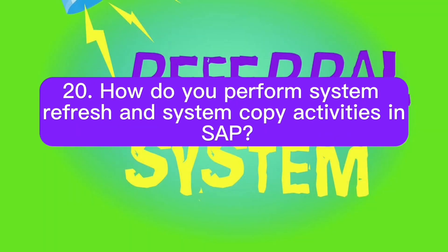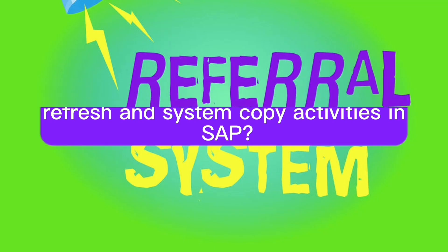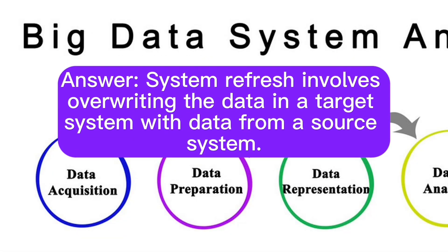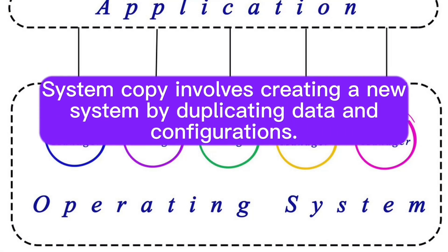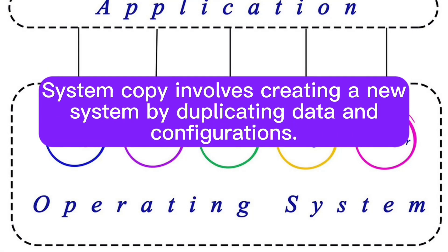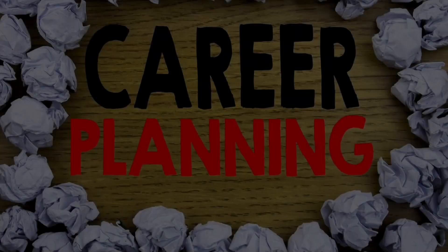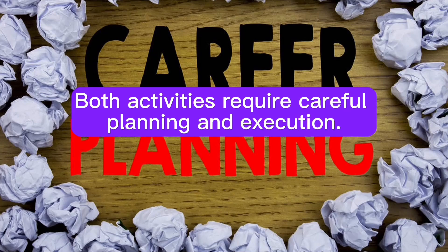Question 20: How do you perform system refresh and system copy activities in SAP? System refresh involves overwriting the data in a target system with data from a source system. System copy involves creating a new system by duplicating data and configurations. Both activities require careful planning and execution.